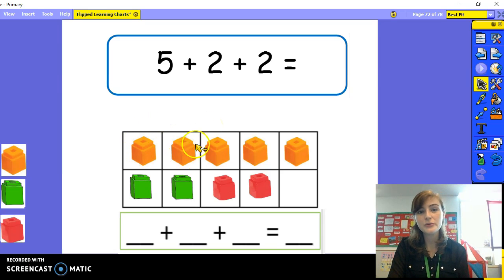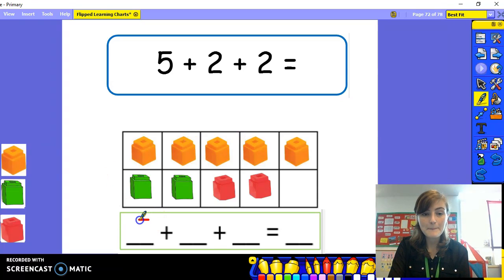One, two, three, four, five, six, seven, eight, nine. The total is nine. That means five plus two plus two equals nine. Nine, well done. You are amazing. Give yourself a firework. Well done.